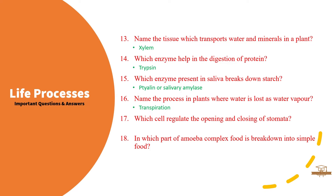Question 17: Which cells regulate the opening and closing of stomata? Answer: Guard cells. Question 18: In which part of amoeba is complex food broken down into simple food? Answer: Food vacuole.